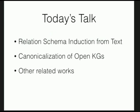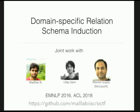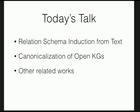Today's talk is divided into three parts. First: relation schema induction — how do we discover types of knowledge relations from a domain's data. Second: canonicalization — how do we figure out that 'Obama' and 'Barack Obama' are actually one entity. Finally, I'll conclude with related work.